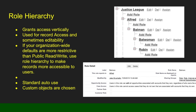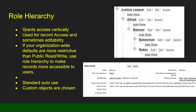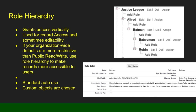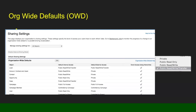With the role hierarchy, this is how we can grant access vertically — it's used for record access and sometimes editability. If your org-wide defaults are more restrictive than public read, you can use your role hierarchy to make records more accessible to users. So if your default is private, you can use a role hierarchy to grant additional access up the chain. If it's public read only, you can use role hierarchy to grant edit access up the chain. By default, all standard objects use the role hierarchy. With custom objects, you have to specify whether or not you want them to use the role hierarchy, which is done in the object settings.